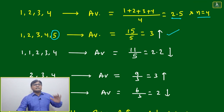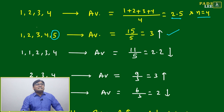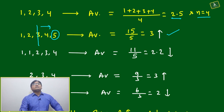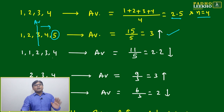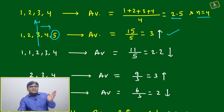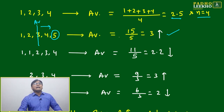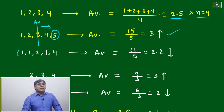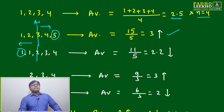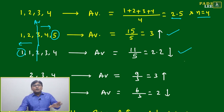What is happening here? The average is increasing. Why is average increasing? Because you added 5, which falls on the right side of the average. The average was around 2.5, so adding a number on the right side of the average makes the average go up. If you add a number on the left side of the average, the average will go down.